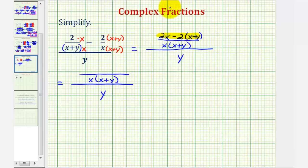So now looking at the numerator, we would have two x, and now we'll distribute negative two because of the subtraction. So we'd have minus two x, and then minus two y. Well, two x minus two x is zero, so this numerator simplifies to negative two y.